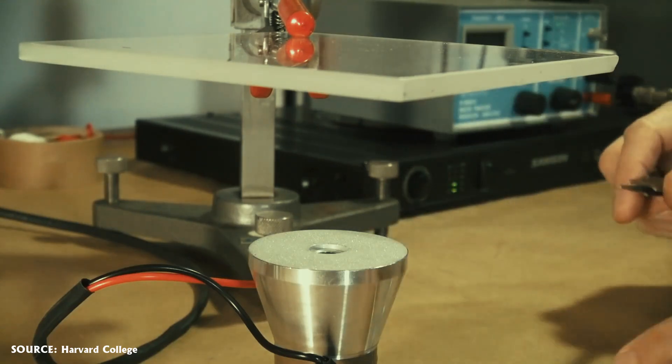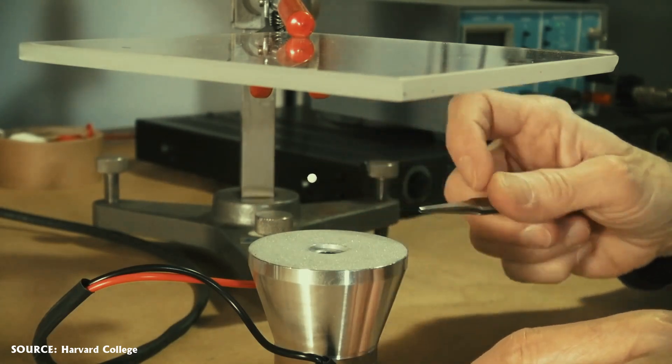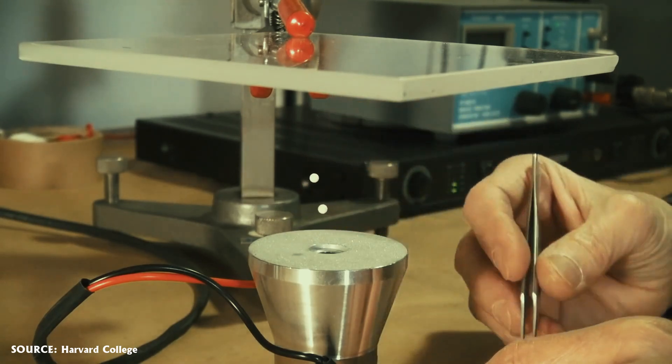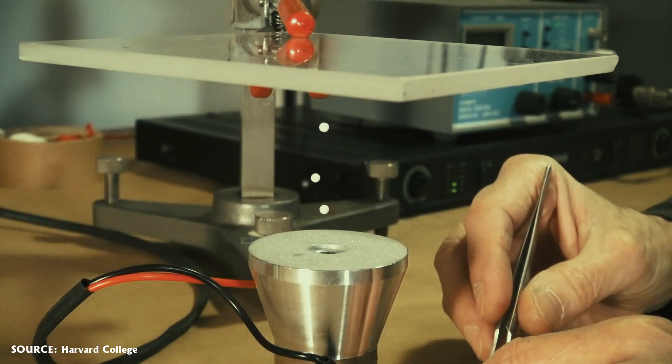The objects that can be levitated through acoustic levitation are typically lightweight and can resonate with the sound waves. The intense pressure at the node stabilizes the object, keeping it suspended against the force of gravity. It's like an invisible force field holding things in place.